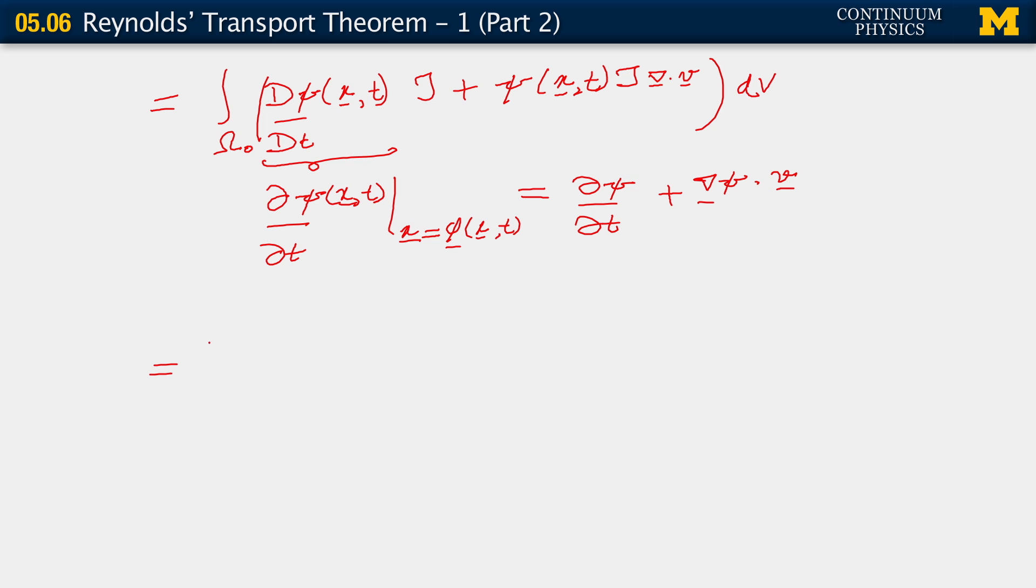So putting all of this together, we end up with an integral which looks like this: partial of psi with respect to time, plus—now, this term is multiplied by j, and then we have this term here.